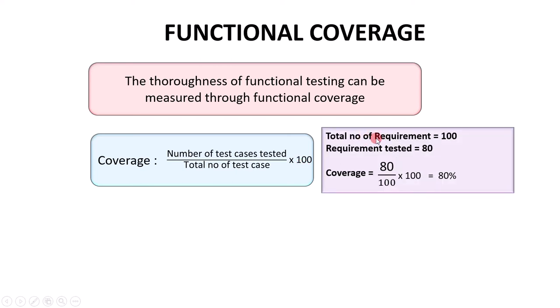Let's see an example. Suppose you have a total number of requirements equal to 100, and the number of requirements tested is 80. Then functional coverage equals 80 divided by 100 and multiplied by 100, which equals 80%. That means 80% of the functional requirements are tested.